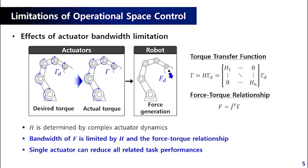Therefore, a single bandwidth limited actuator can reduce all related task performances. This is the reason why precise control is more difficult to be achieved in operational space control than in joint space control.